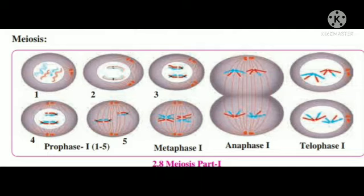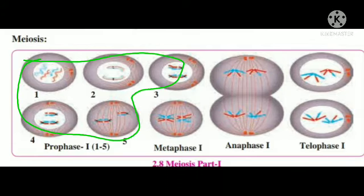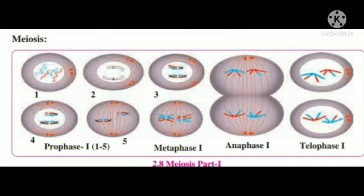In meiosis first you will see prophase, metaphase, anaphase, and telophase. In this case, homologous chromosomes undergo crossing over and hence there is genetic recombination. The homologous chromosomes are divided into two groups and from these, two haploid cells are formed. The prophase of meiosis one is a lengthy phase subdivided into five phases.